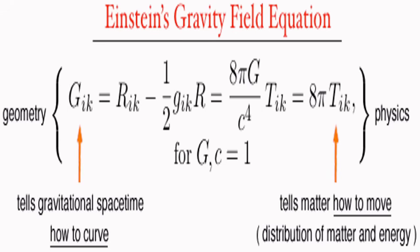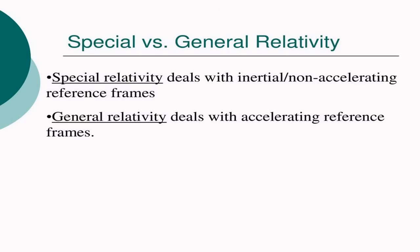Due to general relativity, we have the famous equation where gravity tells space-time how to curve, and this tensor tells matter how to move. The basic difference: special relativity deals with inertial and non-accelerating frames of reference, whereas general relativity deals with accelerating frames of reference — and there are many other differences.